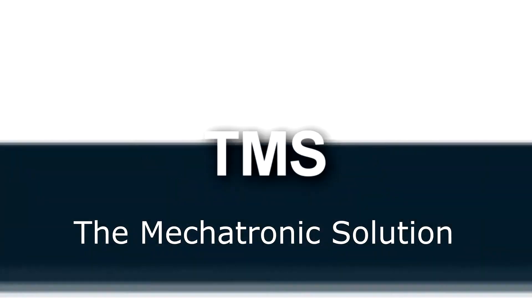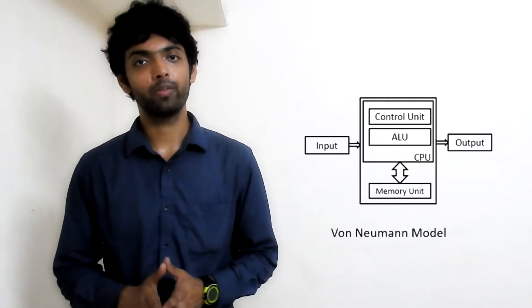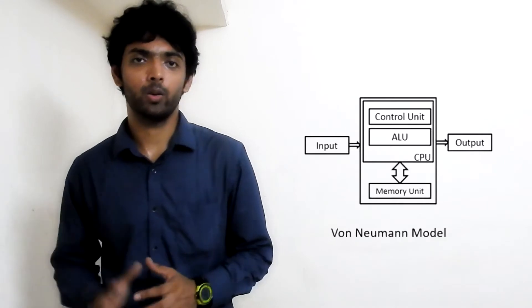I'll explain Von Neumann architecture first, then Harvard architecture. In Von Neumann architecture, there are only three components in total: an input field, a CPU, and an output field. It has a linear flow of data, meaning data can only flow from input to CPU and CPU to output.